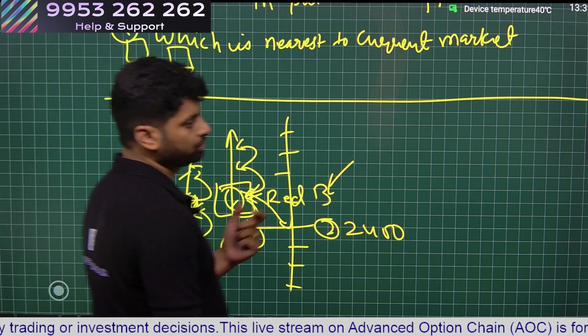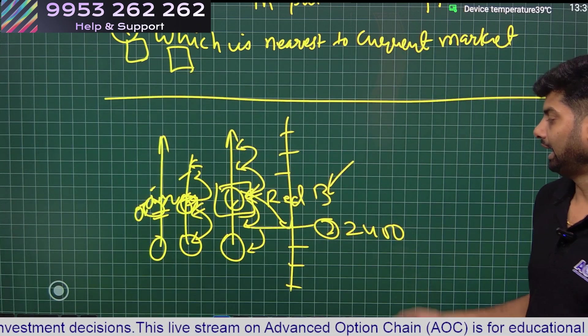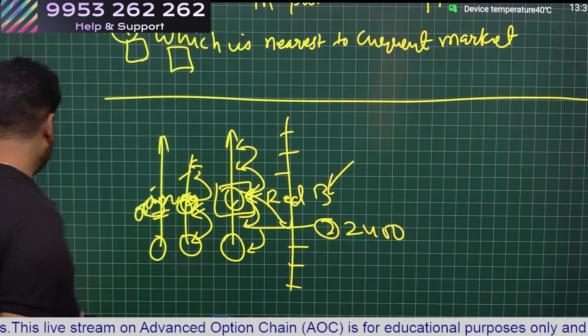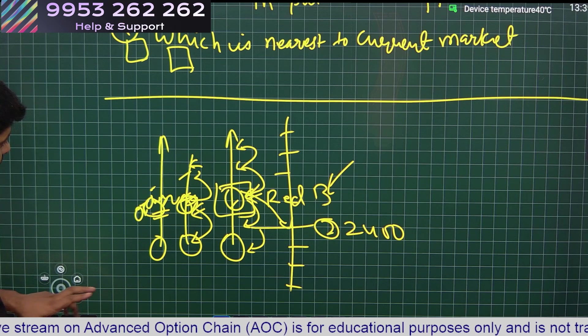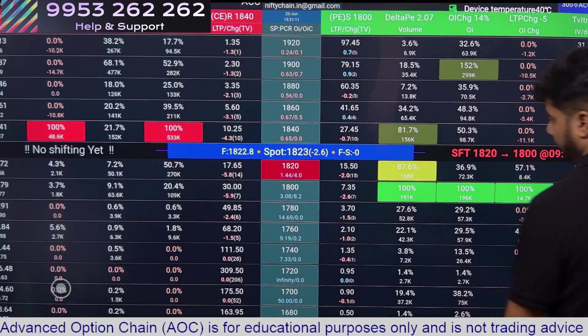Similarly in the put side, whichever strike price has the maximum or the green box and is nearest to the spot price, that will be our support. Now let's look at AOC and try to identify our support and resistance.